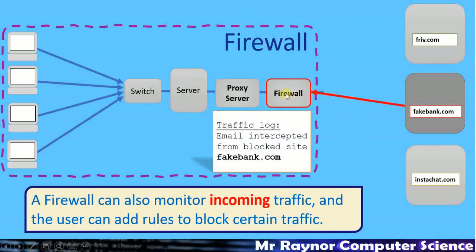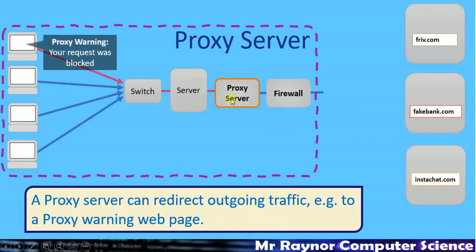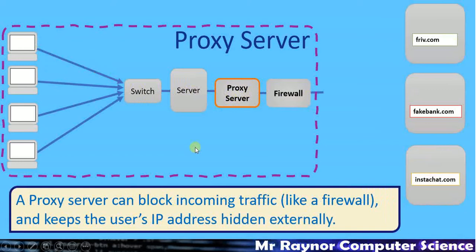The firewall acts like a line of defense — a wall stopping data coming in or out. Moving on to the proxy server: it has a very similar function. When a user tries to access certain websites, the proxy server can redirect the traffic to a stored warning page. You may have seen this in school if you've tried to go on a blocked site. Rather than sending the data through to instachat.com, it bounces it back and sends you to a different website with a warning saying you've been blocked. Like the firewall, it can also block incoming requests to protect your network.